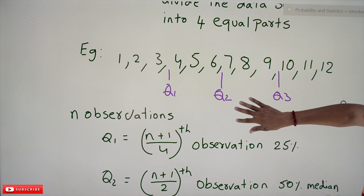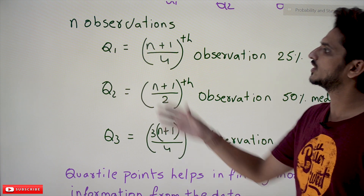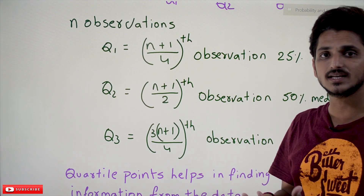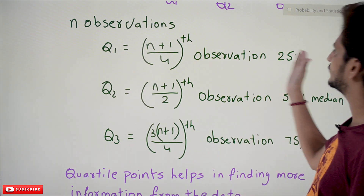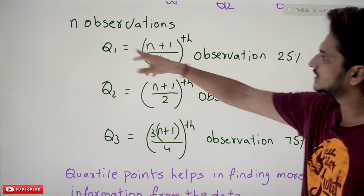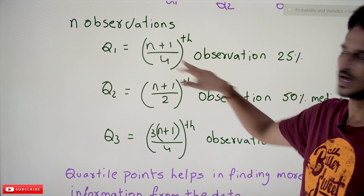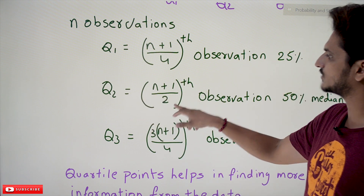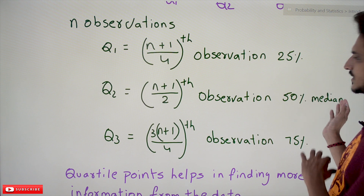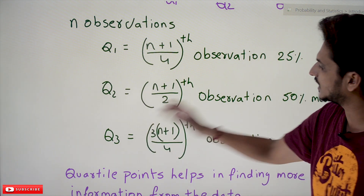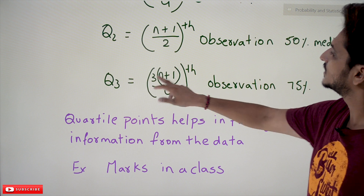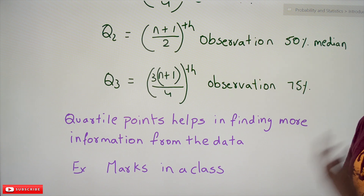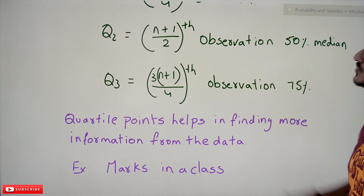Let's understand how to find the quartile points. If you have n observations, Q1 is equal to the (n+1)/4 th observation — we call it the lower quartile, meaning 25% of the data is on the left of that value. Q2 is equal to the (n+1)/2 th observation — we call it the median quartile, at 50%. The third quartile Q3 is the 3×(n+1)/4 th observation. It's very easy to identify these quartile points.